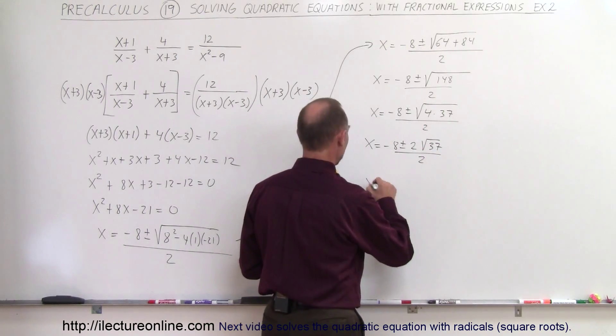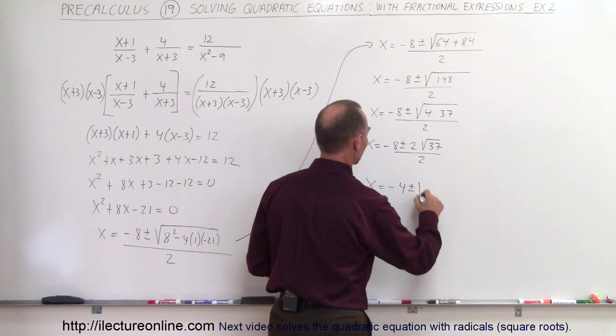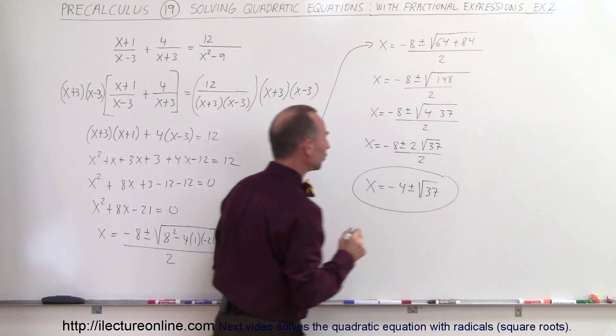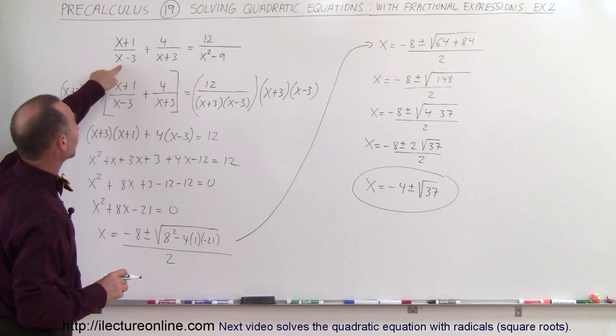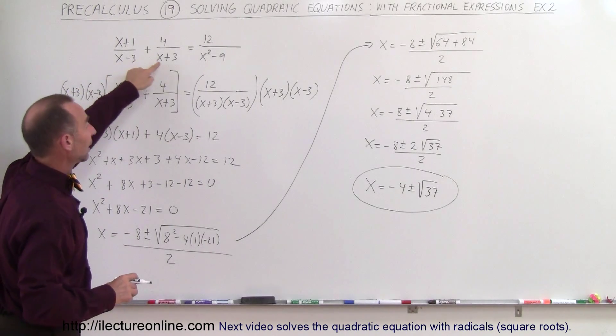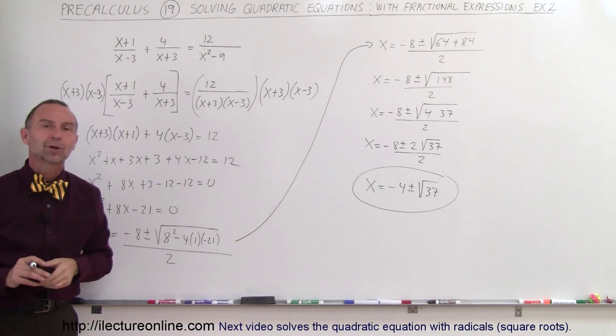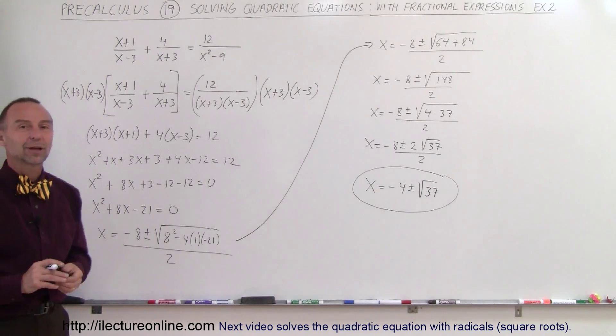And so finally we get x is equal to minus 4 plus or minus the square root of 37, and that is the final solution to our problem. We want to make sure that we don't violate any rules, so x cannot be 3, and x could not be negative 3, and so we don't have that problem. We're good. Those are the solutions, or that is the solution to this particular equation.